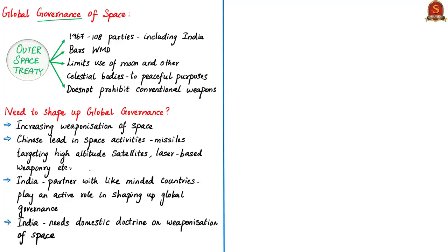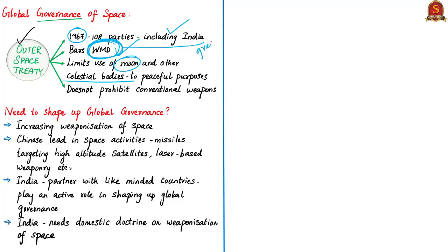The most important international treaty in this context is the Outer Space Treaty, which forms the basis of international space law. It was signed in 1967 and has 108 parties at present, including India. The treaty bars state parties from placing weapons of mass destruction in Earth orbit, on the Moon, or any other celestial body, or stationing them in outer space. A weapon of mass destruction is defined as nuclear, radiological, chemical, biological, or any weapon capable of causing great damage to humans and the biosphere. However, the treaty does not prohibit the placement of conventional weapons in orbit—which is why India has not violated it, as ASAT is only a conventional weapon.